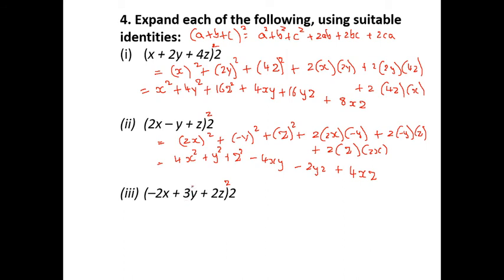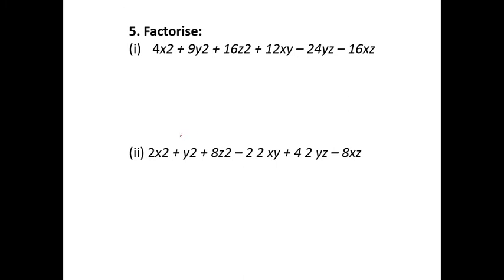When the power is 2 and there are 3 terms, use (A + B + C)² = A² + B² + C² + 2AB + 2BC + 2CA. The next question is the reverse: given an expanded expression, identify it as a perfect square. The formula is: x² + y² + z² + 2xy + 2yz + 2zx = (x + y + z)².